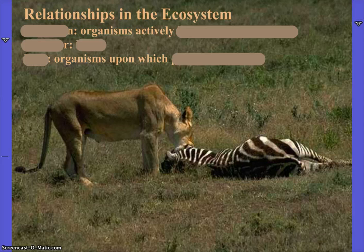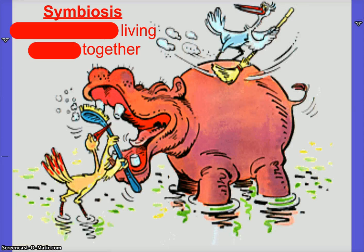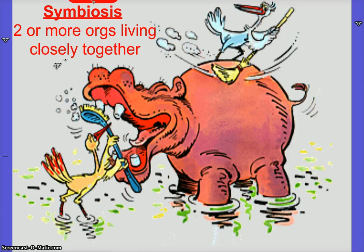So this is where you guys were yesterday. In your notes, put this slide before predation, because predation is a type of symbiosis. What's the definition of symbiosis? It's definitely a relationship, but almost all organisms have some sort of relationship — what makes this one unique? They live together. So it's two or more organisms living closely together, forming some kind of relationship. It doesn't have to be a positive one; it could be negative or even nonexistent.